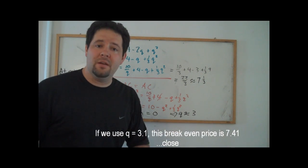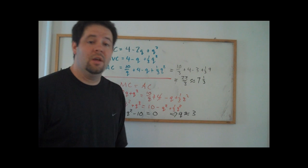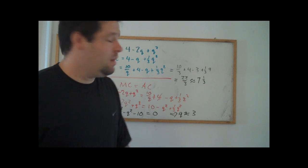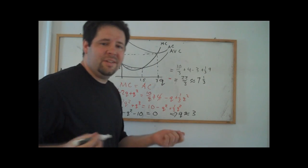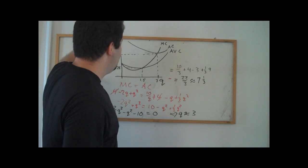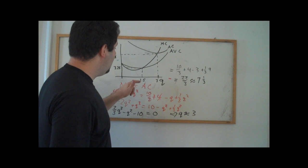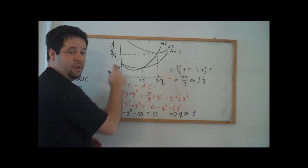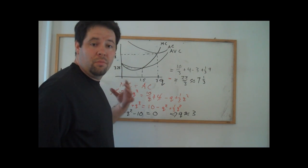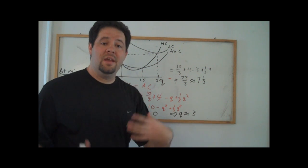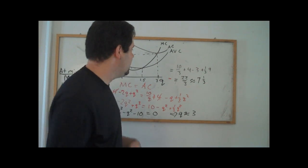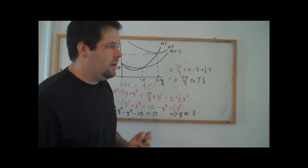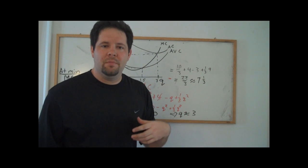The breakeven price of approximately 7.1 is significantly bigger than the shutdown price of 3.25. Putting it all together on a graph: average cost is at a minimum around q = 3, average variable cost is at a minimum at q = 1.5, the breakeven price is 7.1, and the shutdown price is 3.25. We used economics rather than calculus to solve for where these choke-off prices are, and that's a really useful and fruitful way to analyze firm supply decisions.